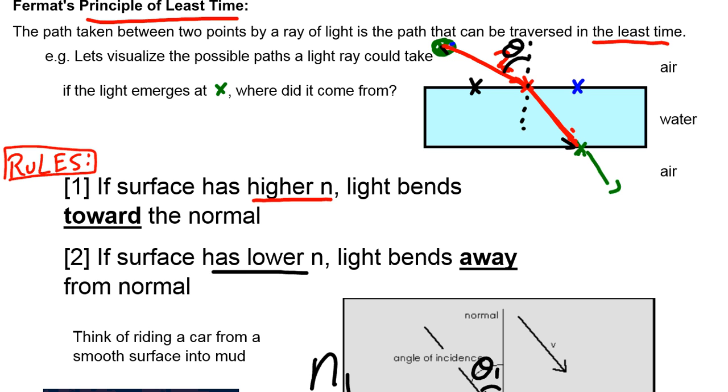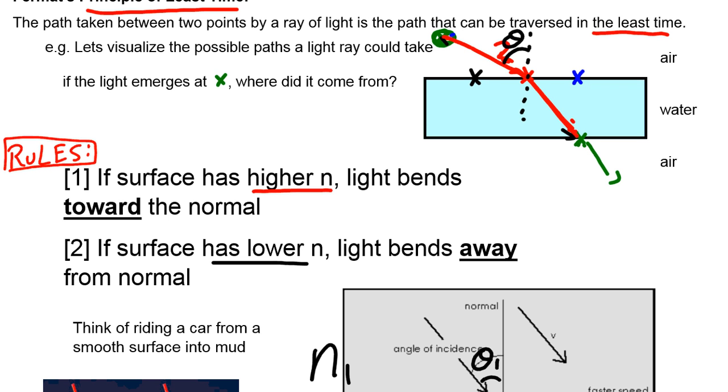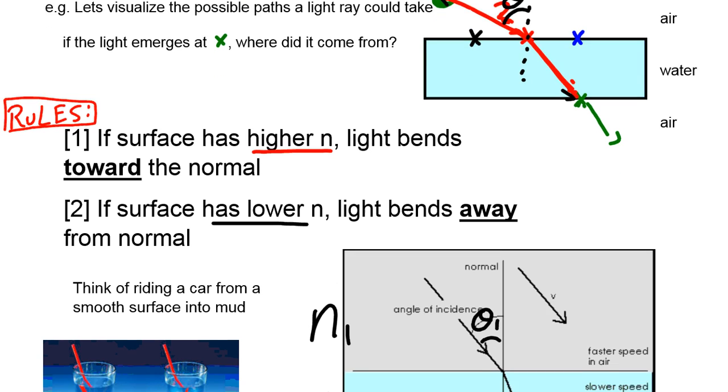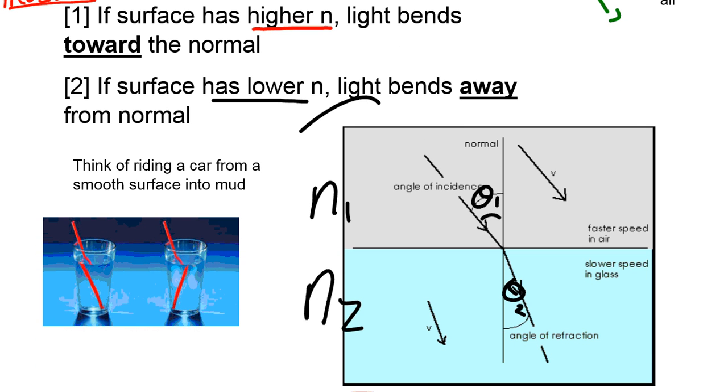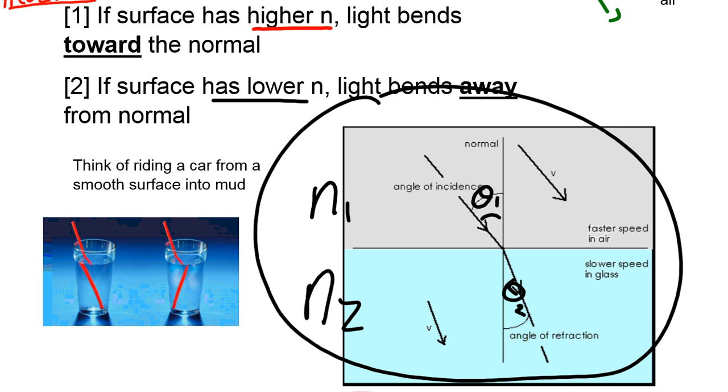If the surface has a lower index of refraction that it's going into, light's going to bend away from normal. Again, because it's able to travel a further distance in that material in the same amount of time because it's traveling faster. As a picture, if you want to visualize this, consider the following: where you have two materials, N1 and N2. The light enters at some angle theta 1, and it's going to bend to some new angle theta 2 in the case that the second material has a higher index of refraction than the first material.